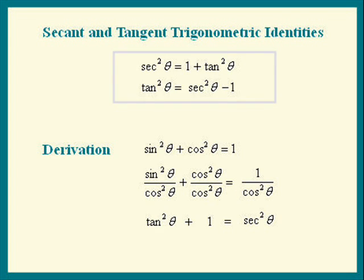The identities on top are just rearrangements of this equation. Secant squared is 1 plus tan squared, and tan squared is secant squared minus 1. Those formats are the ones we end up using later.